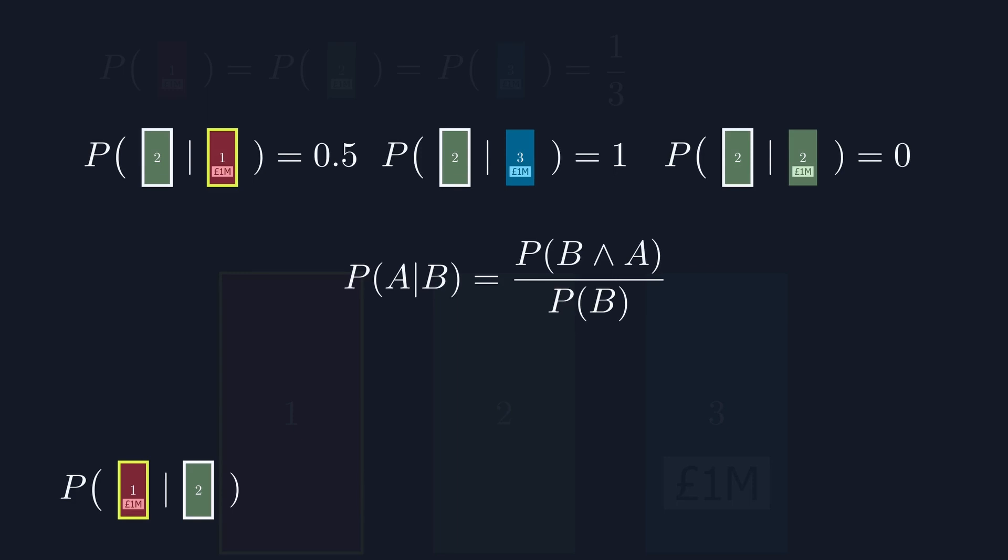Intuitively, this formula is saying that the probability of A, given that B has happened, is equal to the probability of A and B happening, rescaled to take account of the fact that B has actually happened. It's important to note now that the probability of A and B happening is the same thing as saying the probability of B and A happening, so we can switch these around. Also, we can reuse the formula from before to see that the probability of A and B can be written like this. By combining these two formulas together, we get a new formula called Bayes' theorem.